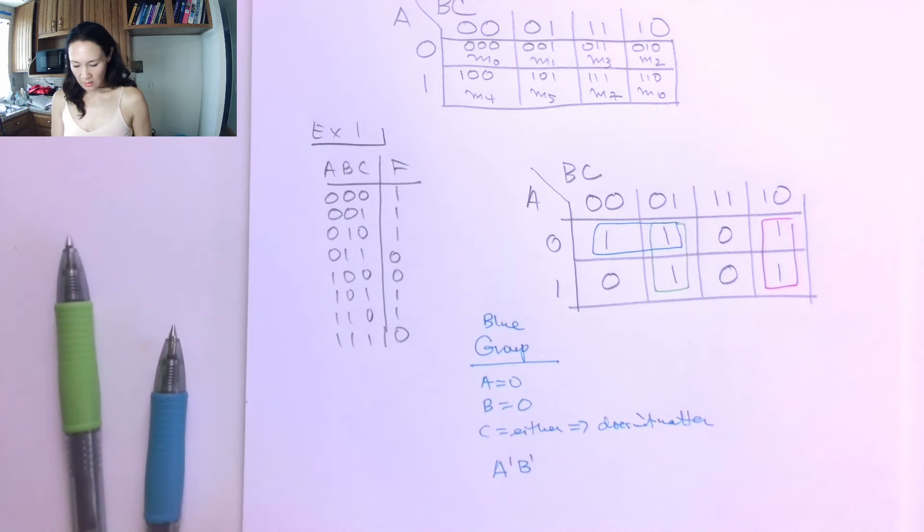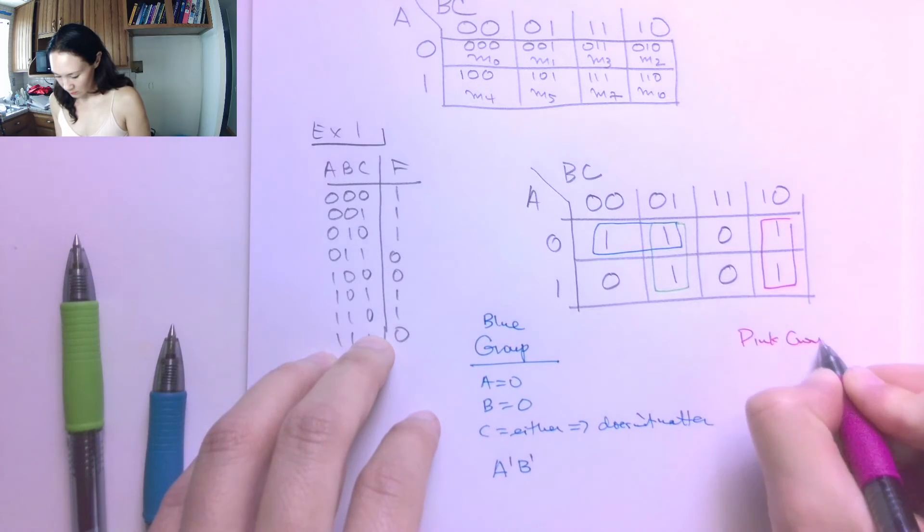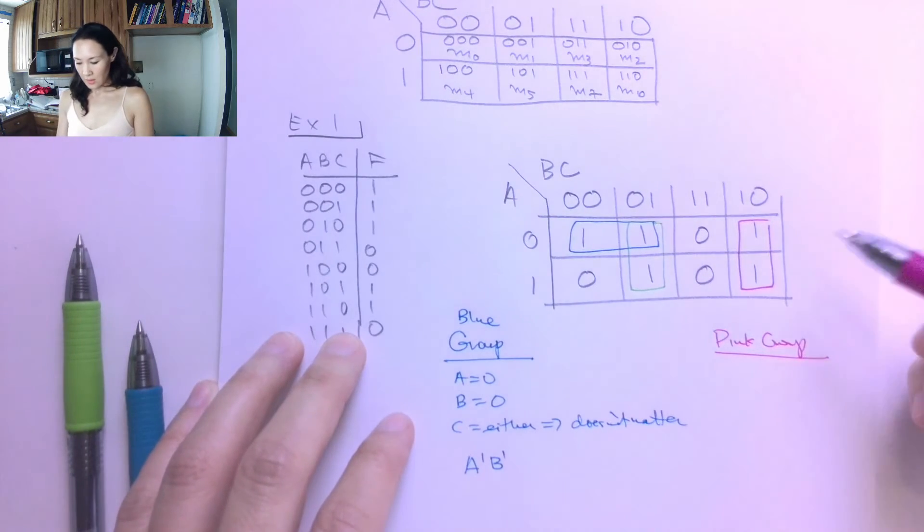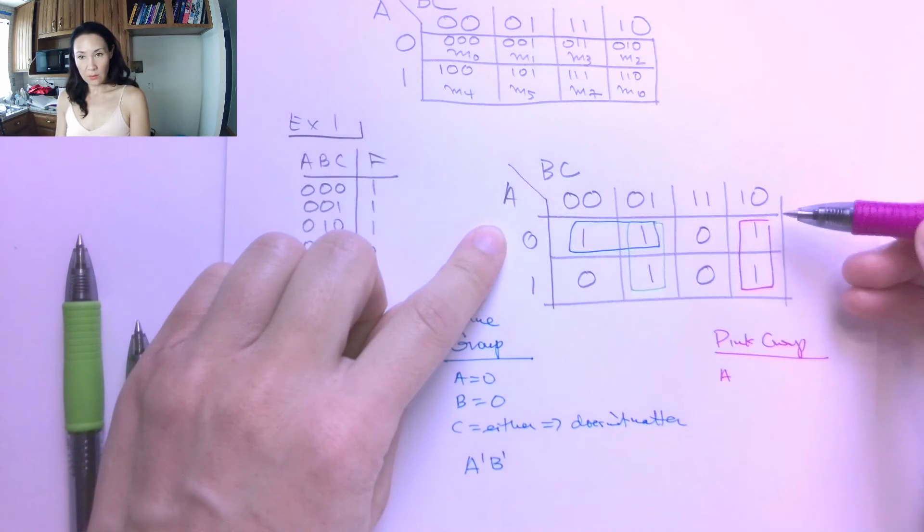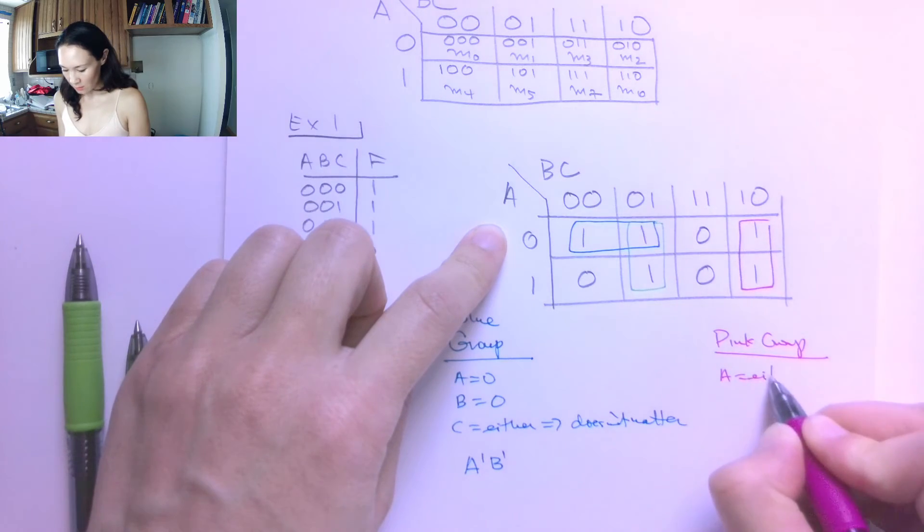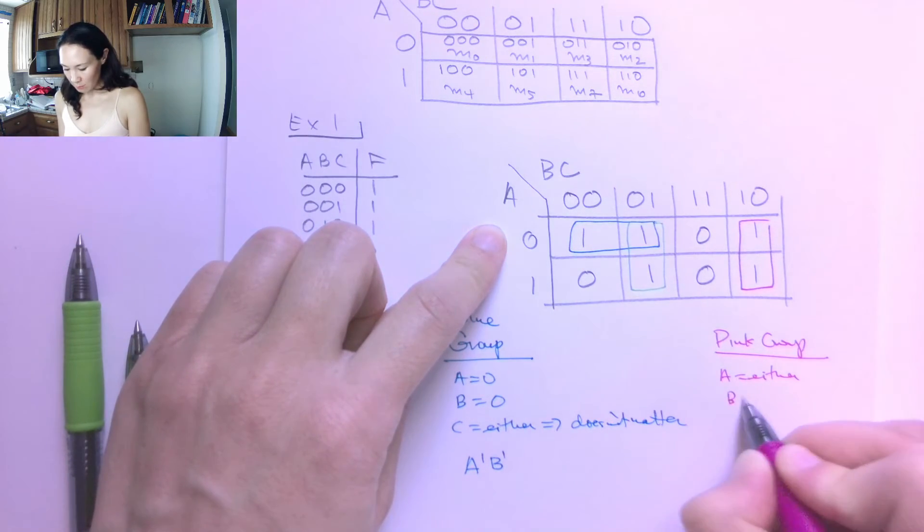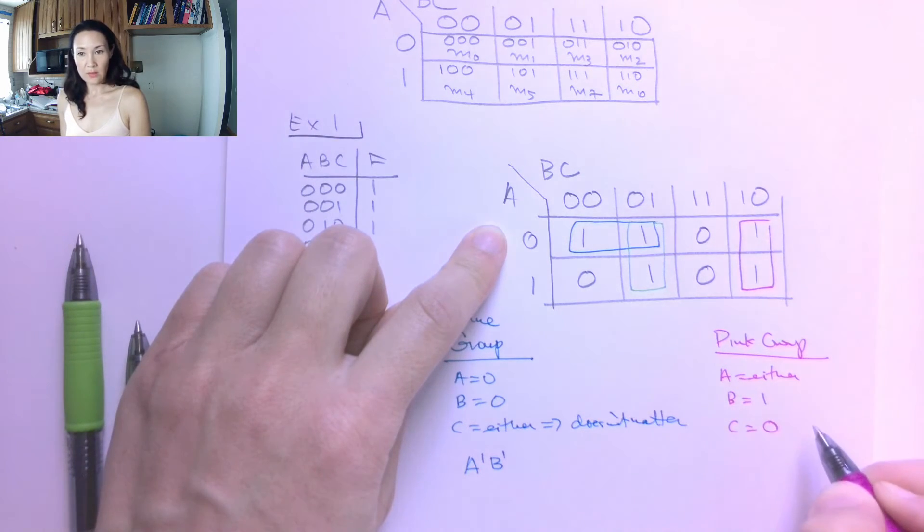So then let's do this pink group. So what's true for this group here? Well, we have that a can be either 0 or 1. And we'll have 1s in this pink group. So this is either. We have that b is equal to 1. And we have that c is equal to 0.